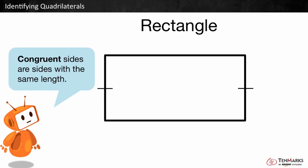We can use a little mark like this to show one pair of congruent sides, and a little double mark like this to show another pair of congruent sides. All pairs of adjacent sides are perpendicular, meaning all four angles are right angles.